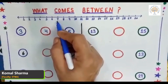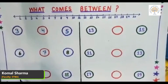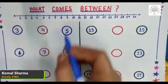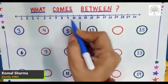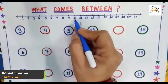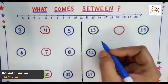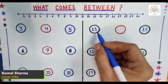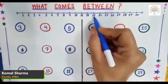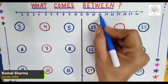The middle number of six and eight is number seven. Now we will see what is the middle number of nine and eleven. Look at the number line — here is nine and eleven, and the middle number is ten. Students, what comes between number thirteen and fifteen? Look at the number line — here is thirteen and fifteen, and the middle number is fourteen.